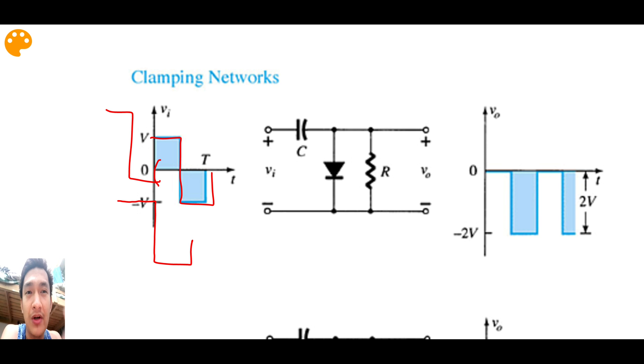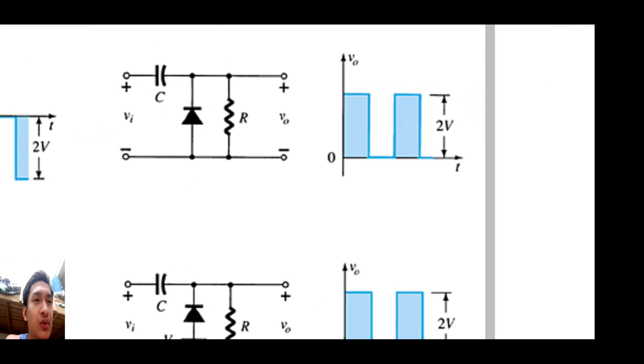It just clamps the signal either higher or lower. Unlike the clipper that cuts some portion of the signal, in a clamping network, whatever the input is, it's still the output. However, it's just another level, either higher or lower. So that's a clamper circuit.